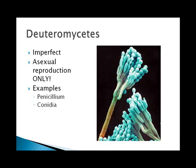The deuteromycetes are called the imperfect fungi because they have no sexual spores — they perform only asexual reproduction, usually through budding. Examples are Penicillium and Candida. Penicillium is particularly important because it produces penicillin, the earliest antibiotic we've ever used.